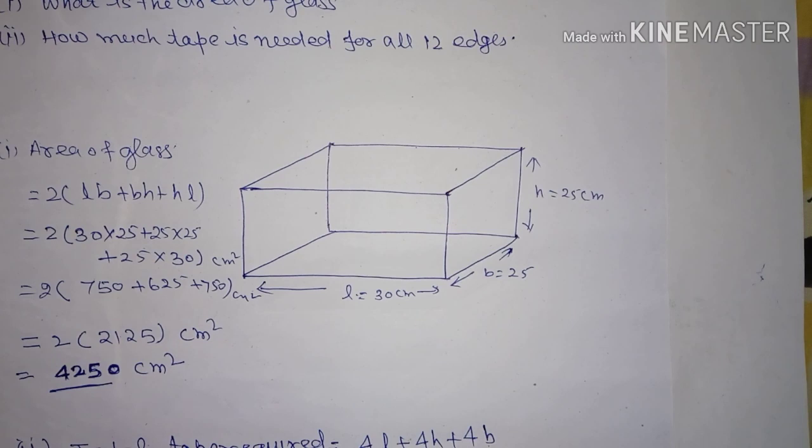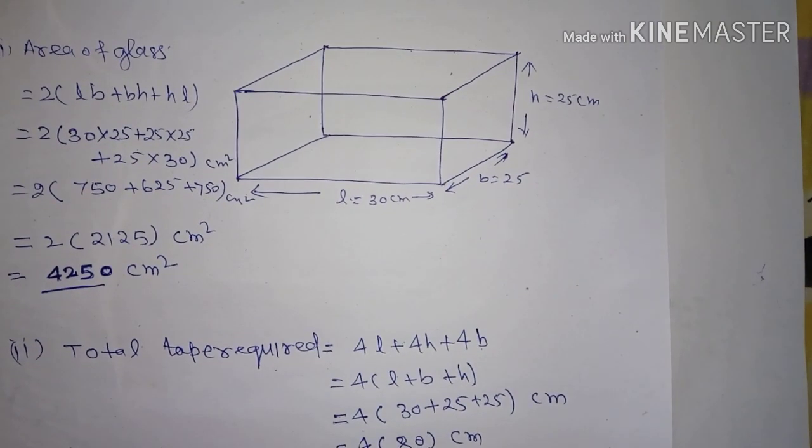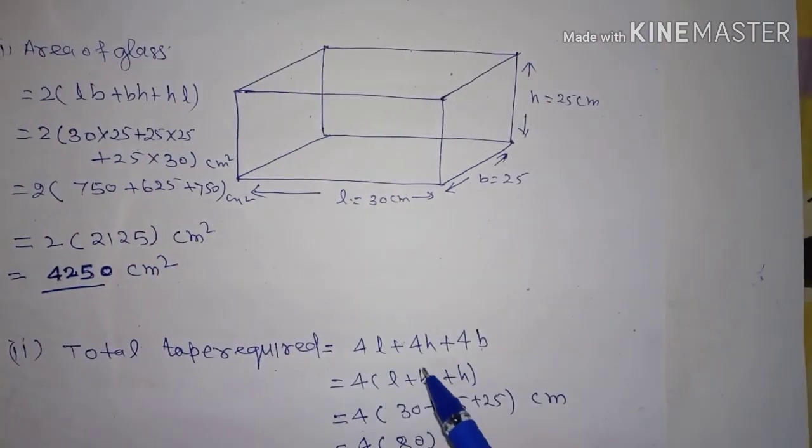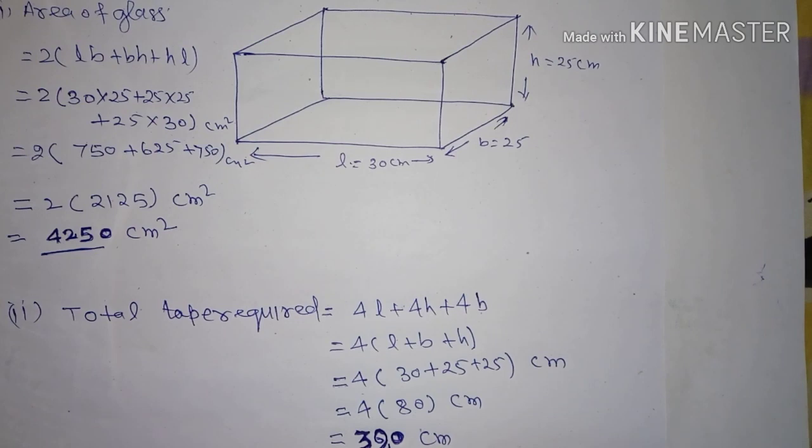Second, how much total tape is needed. There are 12 edges, so we'll find the perimeter of 12 edges. The length will be 4 times l plus 4 times h plus 4 times b (breadth). Put the values and this comes to 320 centimeter tape needed to stick the glass panes. This was the answer to question number 6. Thank you.